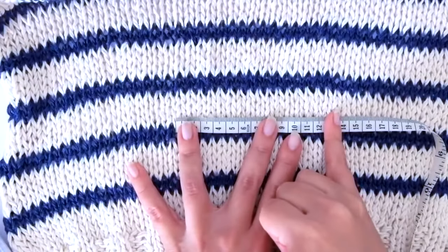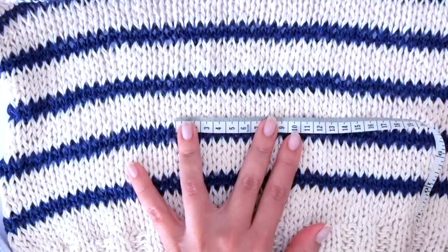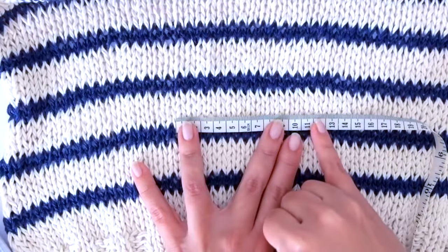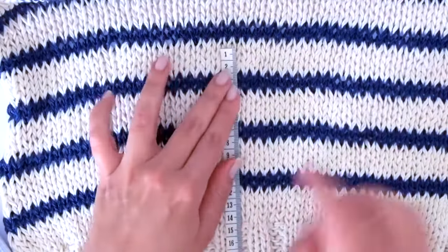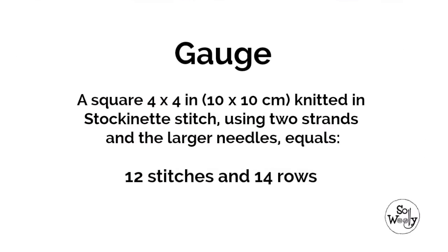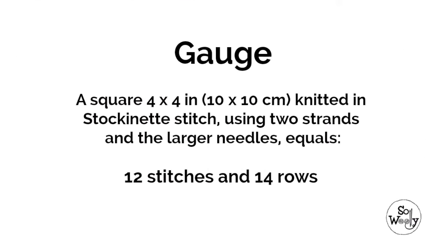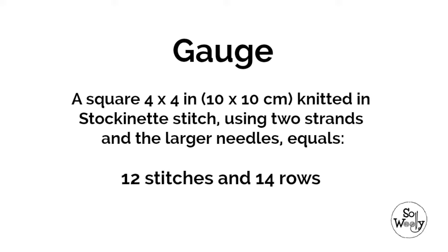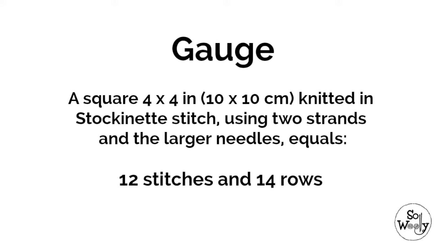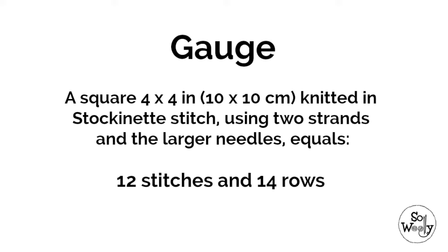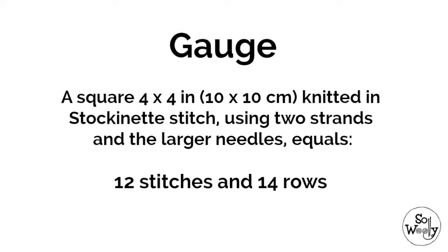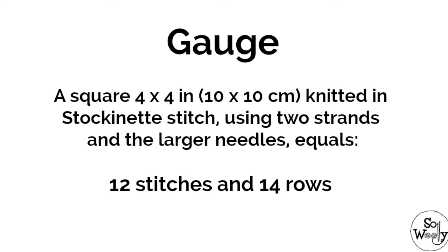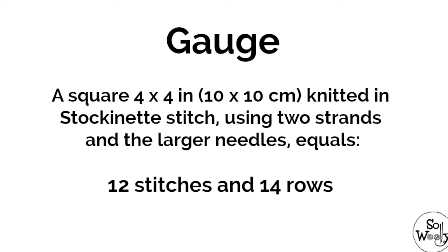So let's talk about gauge. A square 4 by 4 inches or 10 by 10 centimeters — I will show you how many stitches to cast on, how to build the sleeves, everything. But if your gauge is wrong from the beginning then you won't be happy with the result. So think about it.